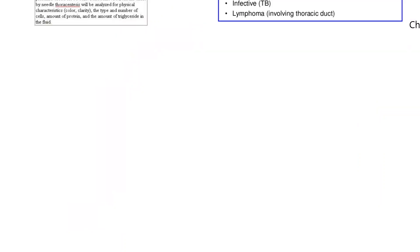Another body fluid disorder is called chylothorax — a special case where lymph, or very fatty lymph, collects in the thoracic cavity, which contains the heart and lungs. All the lymph collected from the body goes back in lymph vessels and dumps into very close to the vena cava in what's called the thoracic duct. If this thoracic duct is leaking, then it's going to leak into the thorax — hence the term chylothorax. It's relatively rare.